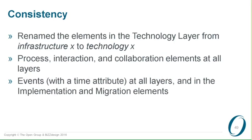There are some changes to improve consistency of ArchiMate. One example is that we changed the name of some concepts. In the technology layer, everything used to be called 'infrastructure something,' which is a bit strange — in the business layer it was 'business something,' so we renamed that to 'technology something.' That's a name change only; it doesn't make any difference to the meaning or notation of the concepts.